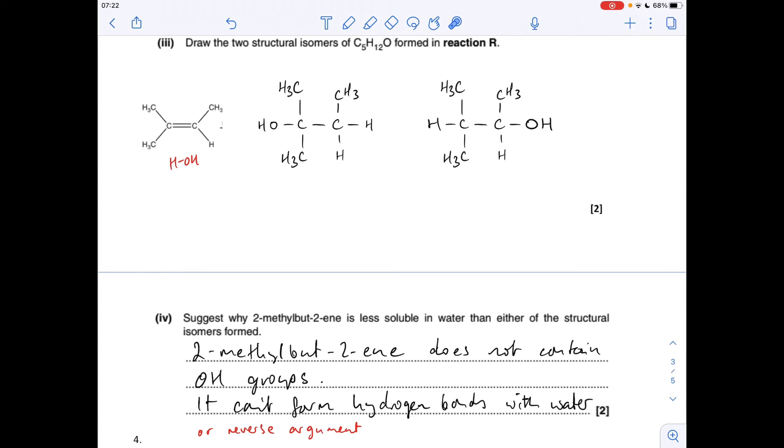And then the last bit of the question. Suggests why 2-methylbutoene is less soluble in water than either of the structural isomers formed. Well, 2-methylbutoene doesn't contain OH groups, so it can't form hydrogen bonds with water. Or you could say the reverse. The products, so these are alcohols, they do contain OH groups, so they can form hydrogen bonds with water.